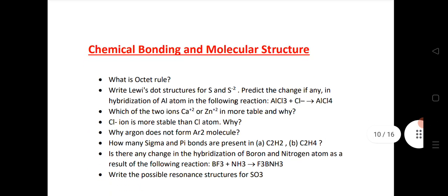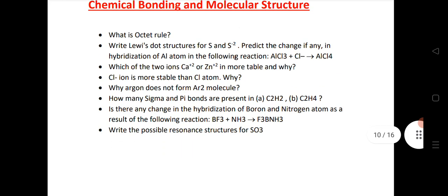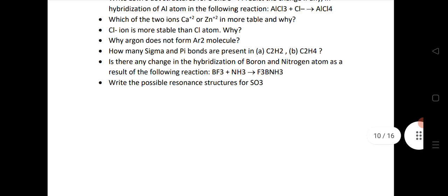Next chapter is chemical bonding and molecular structure. What is octet rule, Lewis dot structure, Ca2+ and Zn2+ are very important questions. Cl- and argon - why does argon not form Ar2 molecules? Sigma and pi bond calculations - how many sigma and pi bonds are present? And SO3 structure.